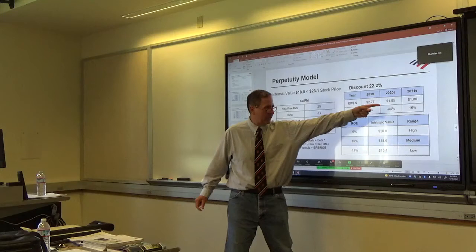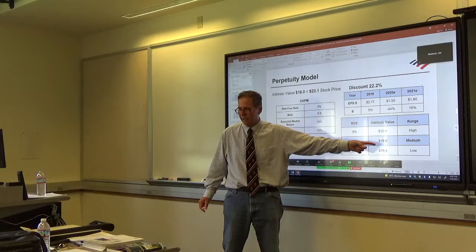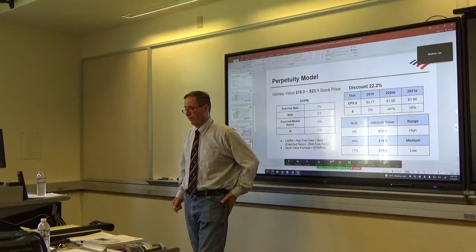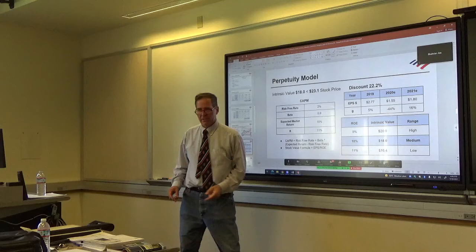So we use a 100 basis point spread between the two. I project out what the earnings per share is going to be next year. Divided by the discount rates, I get the intrinsic valuations, just using perpetuity, which assumes that the earnings per share are going to remain constant forever. Compare it against the current stock price, calculate the premium to discount.